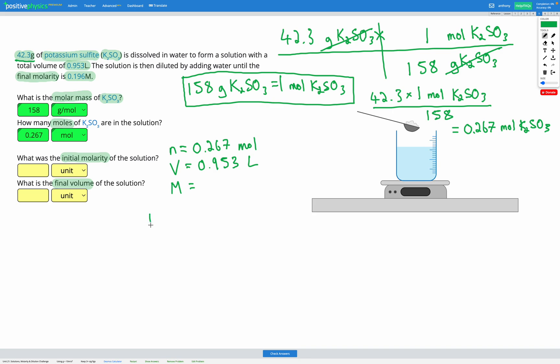We've got M equals N over V. We're trying to find M, so this is already arranged correctly. We can put our numbers straight in. N is 0.267 divided by V, which is 0.953. If we put those into our calculator, we get 0.280 M for our molarity. Let's fill that in and see if we got that correct. Awesome, okay. So we found our initial molarity.